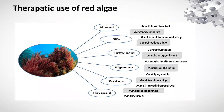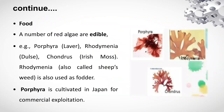Therapeutic uses of red algae: they are used in the form of phenols, fatty acids, pigments, proteins, and flavonoids. Red algae have antibacterial, antioxidant, anti-inflammatory, anti-obesity, and anti-fungal properties. Food: a number of red algae are edible and some are also used as fodder. Porphyra is cultivated in Japan for commercial uses.